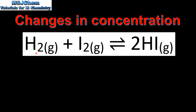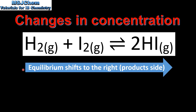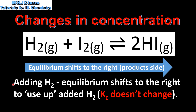Let's look at the effect of adding hydrogen gas to this system at equilibrium. If we add hydrogen gas, the equilibrium will shift to the right — that's the product side — to use up the added hydrogen. If we make changes in concentration, the value of Kc does not change.